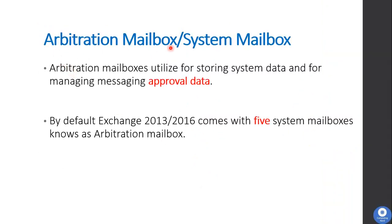First we are going to see detail about arbitration mailboxes, also known as system mailboxes. The arbitration mailbox or system mailbox is used for storing system data and for managing messaging approval data. By default, when you deploy Exchange Server 2013 or 2016, five arbitration mailboxes get created.